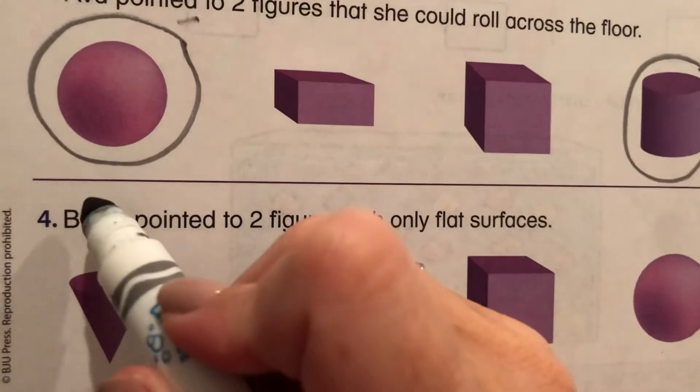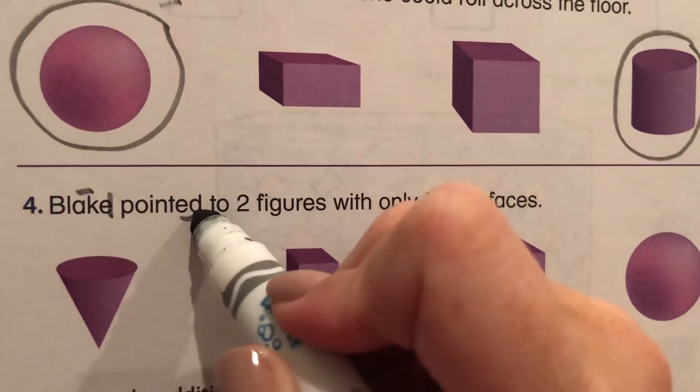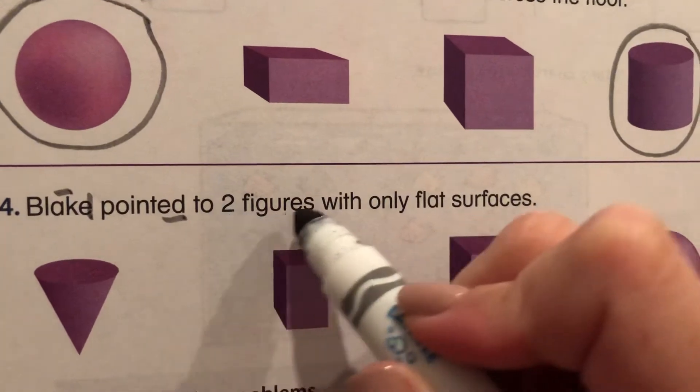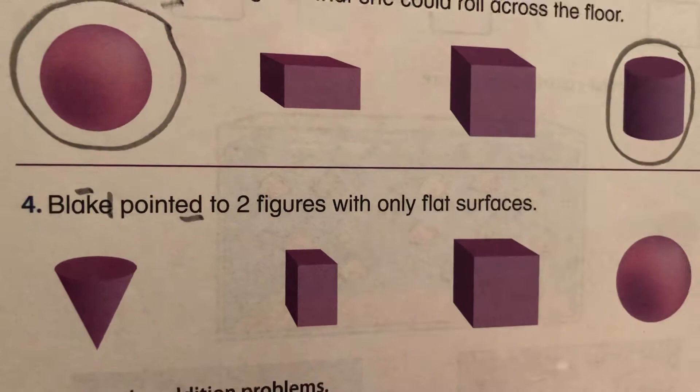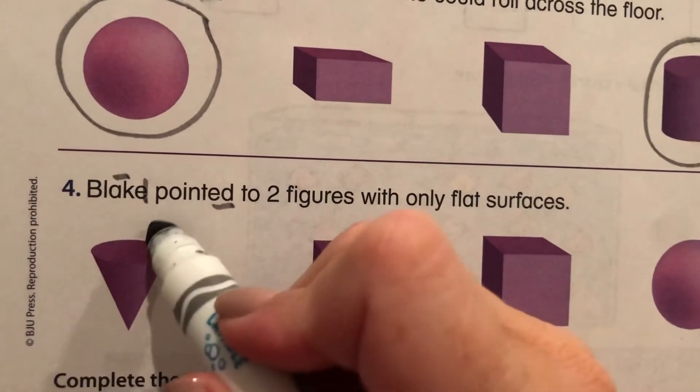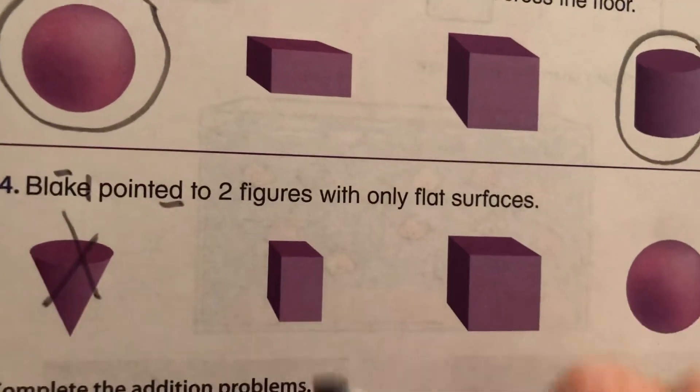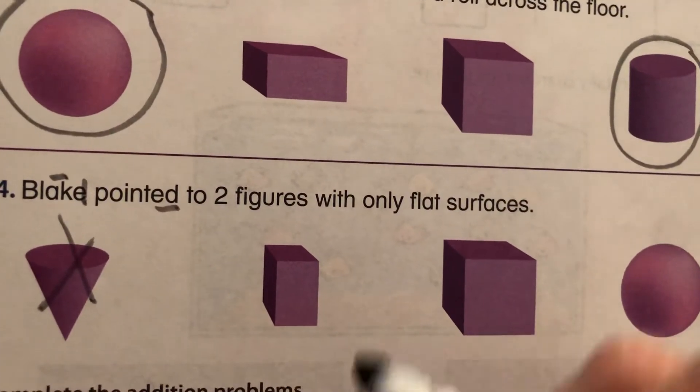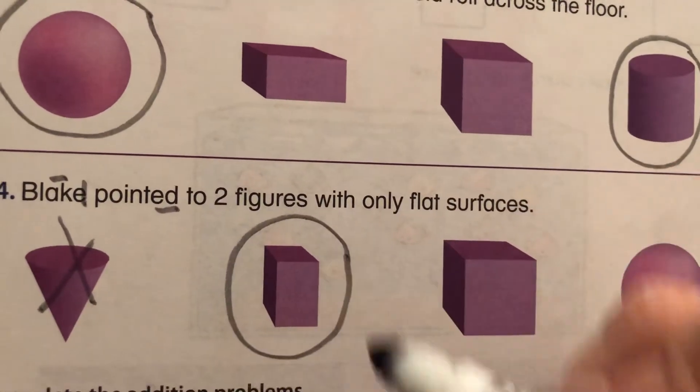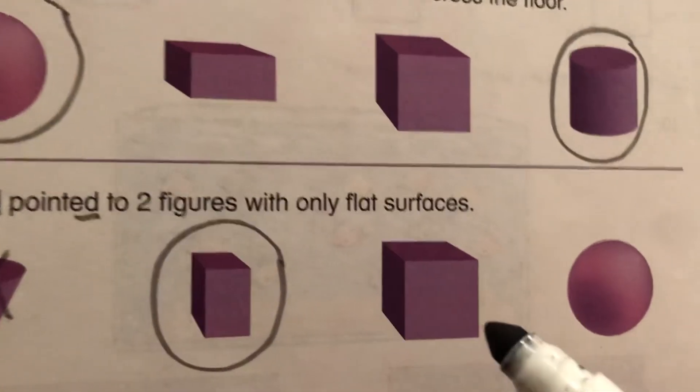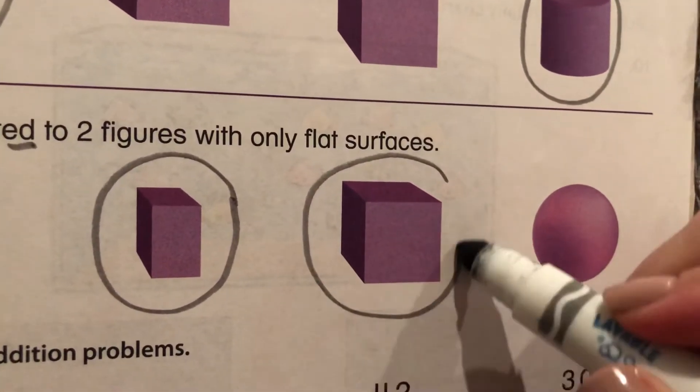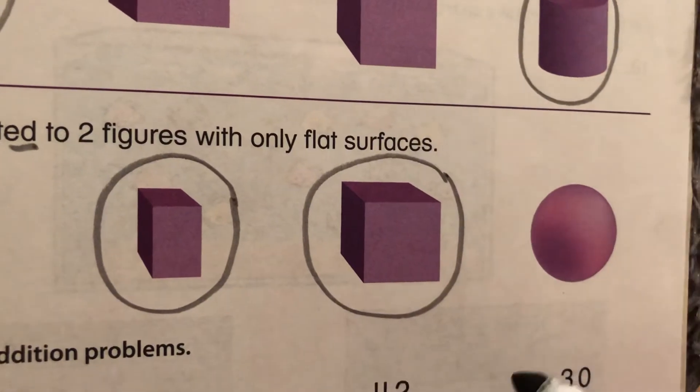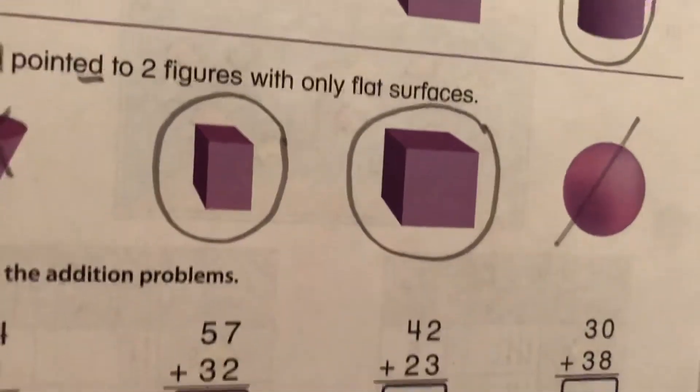Blake pointed to two figures with only flat surfaces. Is this one only flat? The cone? No, it's got some curves. What about the rectangular prism? Yes, this is only flat sides here. What about the cube? Only flat sides. What about the sphere? No, it doesn't have any flat sides.